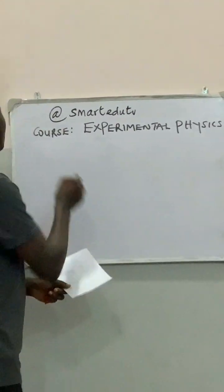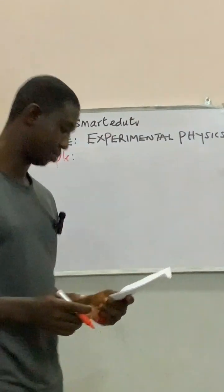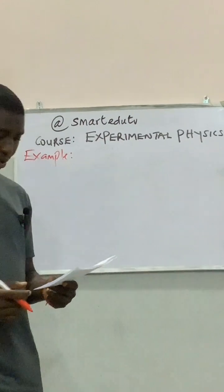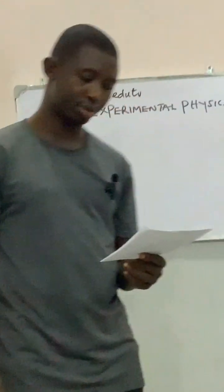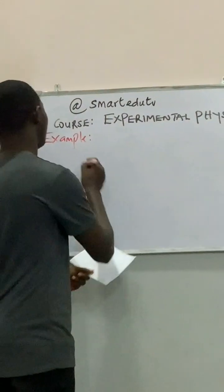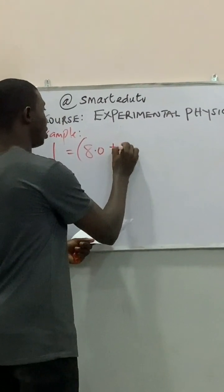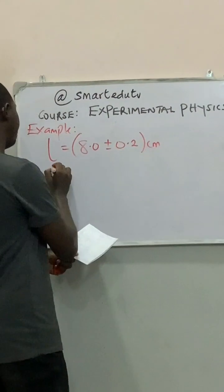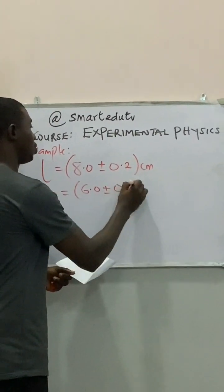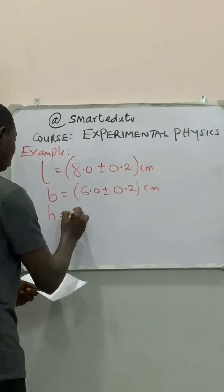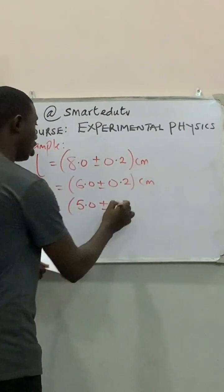So let's look at this example that involves products or quotient questions. A student measured the dimensions of a rectangular box as follows: the length is measured as 8.0 plus or minus 0.2 centimeters, the breadth is measured as 6.0 plus or minus 0.2 centimeters, and the height is measured as 5.0 plus or minus 0.2 centimeters.